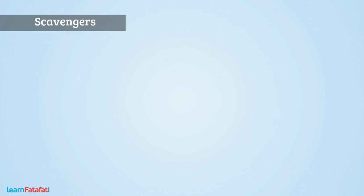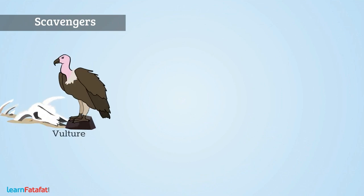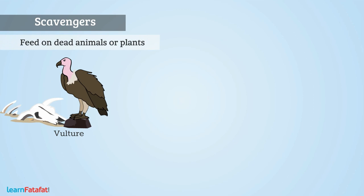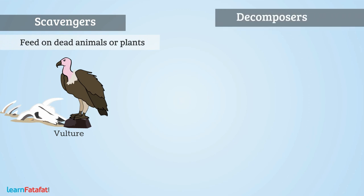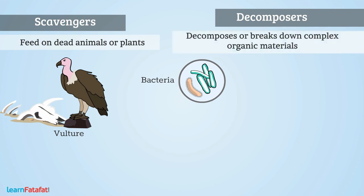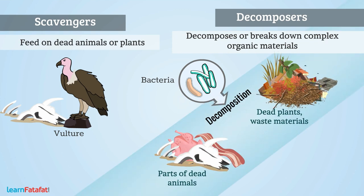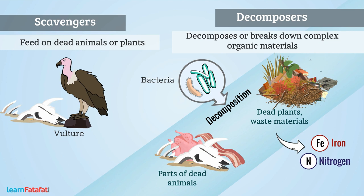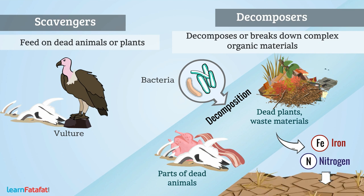Scavengers are animals such as vulture which feed on dead animals or plants. Decomposers are animals such as bacteria which decompose or break down complex organic materials such as dead parts of animals and plants, waste materials, etc., into simple inorganic substances such as iron and nitrogen. These materials go into the soil and become available for plants as nutrients.